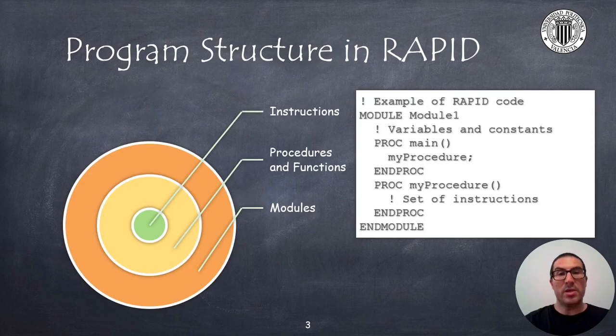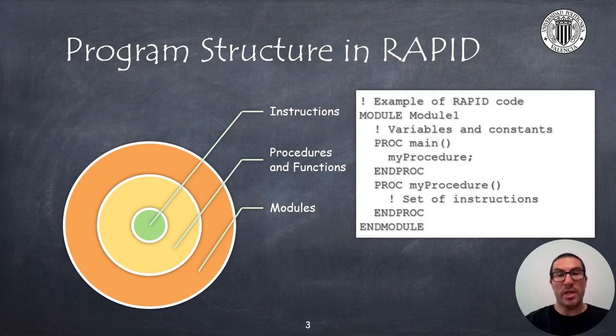The robot controller executes a program module that contains procedures and functions that also contain a set of instructions. Each module must have a main procedure called main that will serve as an entry point. In the main module, we can call another procedure, such as my procedure, in the code example provided. Modules can have a set of variables and constants usually defined at the beginning of the module, such as target configurations for robot instruction motion. Some instructions could have been placed directly in the main procedure, although it is advisable to properly organize your code with procedures for better code readability and organization.